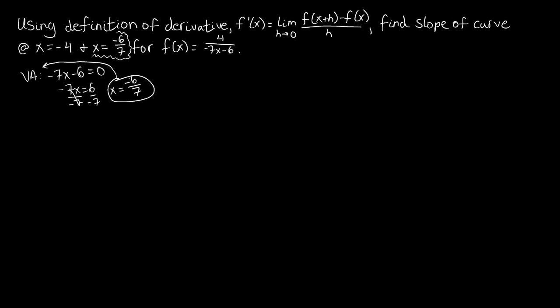So there's a vertical asymptote at x equals negative 6 over 7. We're asked to evaluate what the slope of the curve is at x equals negative 6 over 7. It turns out there's really no curve to find the slope of at this x value, because we have a vertical asymptote there. So f of negative 6 over 7 is undefined, and the slope is not defined — we write ND.